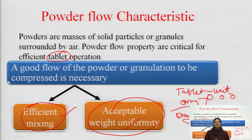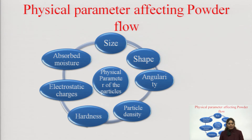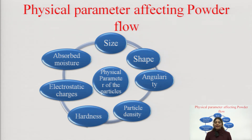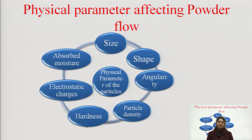If powder flow doesn't happen well, we must analyze what kind of flow is occurring — this is a compulsory pre-formulation study. When we develop a dosage form, we should do pre-formulation studies before going to the scale-up process. If we skip pre-formulation and directly go to large-scale production and then detect a flow property issue, we will face a great loss because tablet production is expensive — many excipients and labels are used to manufacture it.